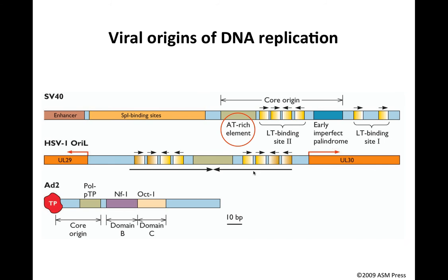Finally, these origins of replication — here for SV40 this is a minimal origin of replication, called the core origin. You can get DNA replication using just this sequence, but if you include neighboring sequences shown in this figure, you get even more efficient initiation of DNA synthesis. Here is the core origin for SV40, here is the origin for herpes simplex type 1 delineated by the blue boxes, and here is the core origin for adenovirus. Next to these origins, in all three cases, there are binding sites for transcriptional regulators, and indeed in the herpes simplex origin there are transcription initiation sites.